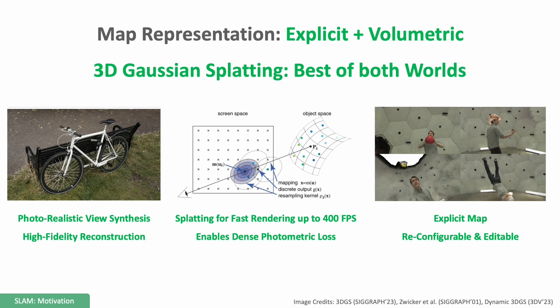In this context, we explore the use of an explicit and volumetric representation: 3D Gaussian splatting. This gives us the best of both worlds — explicit geometry, high-fidelity reconstruction, and fast rendering and optimization.